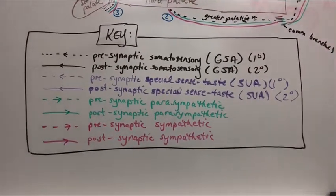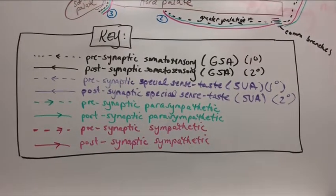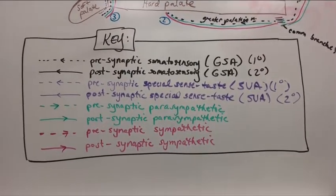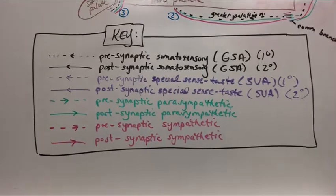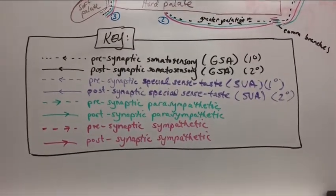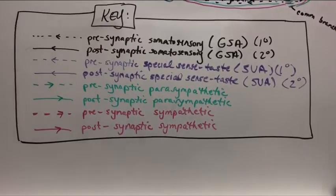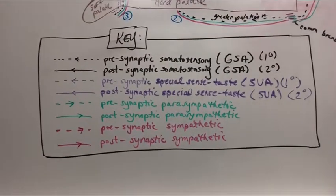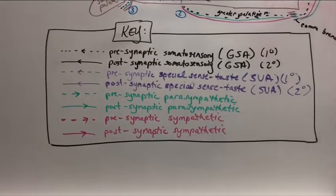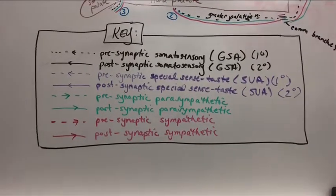This is where we synapse in the CNS. Remember that all sensation always synapses in the CNS and never on a ganglion. The purple dotted line, also afferent going back to the left, is a presynaptic special sense of taste, called special visceral afferent, because it evokes a visceral response. This is our first-order neuron, and the solid line is our postsynaptic special sense of taste - special visceral afferent, our second-order - and we synapse on a nucleus, because all sensation synapses in a nucleus.